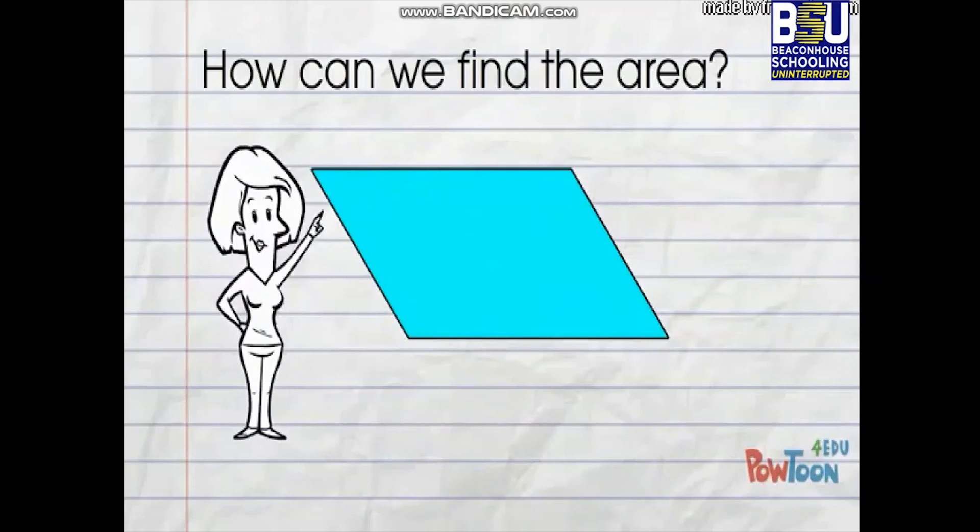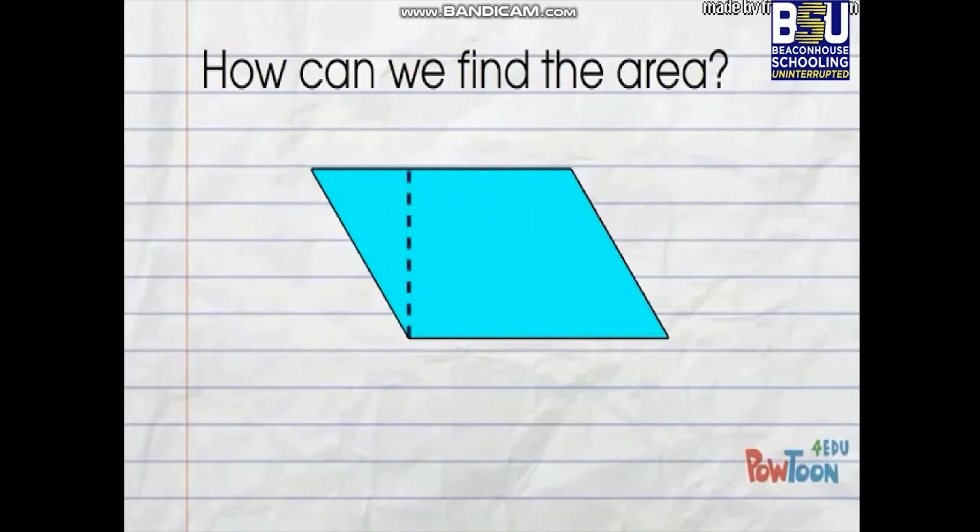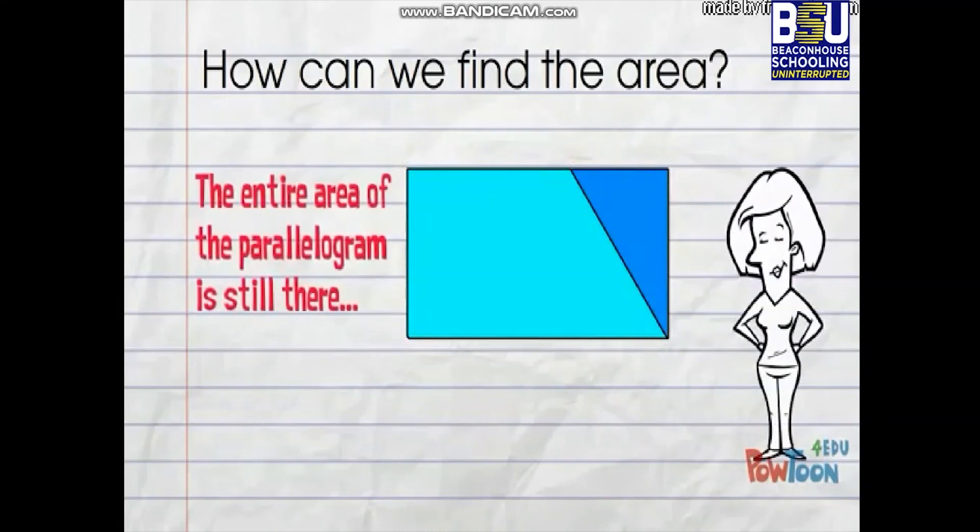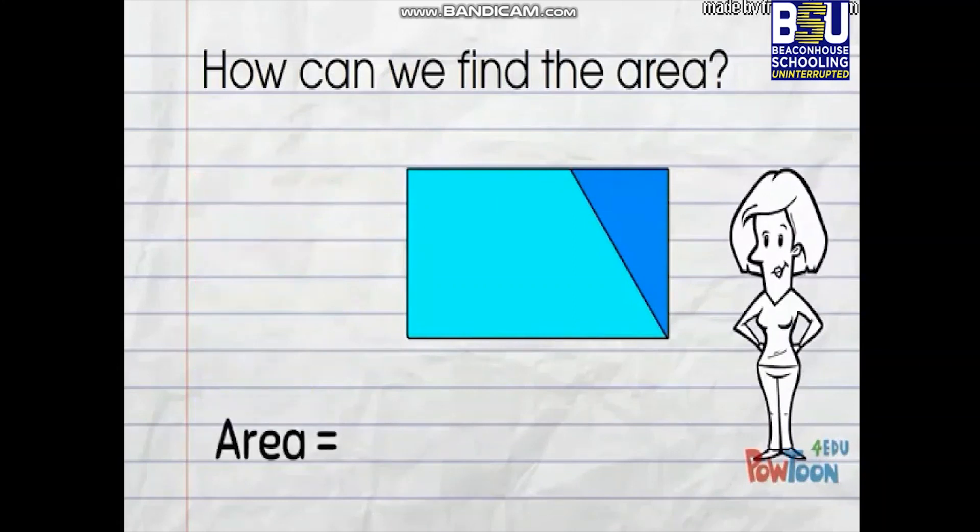How can we find the area? Don't be put off by the sloping sides. If I cut a triangle off this side and move it over to this side, we get a form that is so much easier to work with. I didn't take anything away, the entire area is still there. I just rearranged it to form a rectangle.